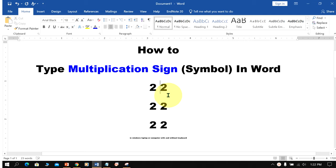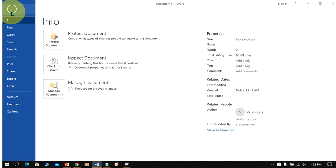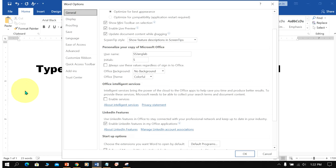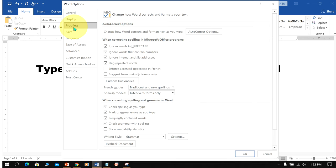To activate the multiplication sign, first go to the File option. Under Options, go to Proofing, and under Proofing, select AutoCorrect Options.